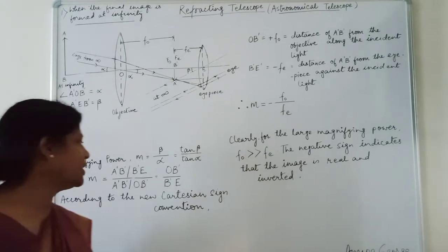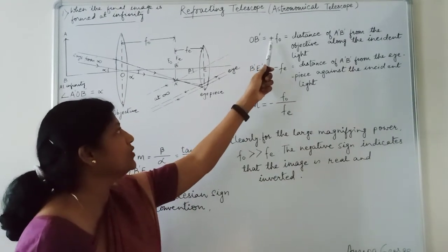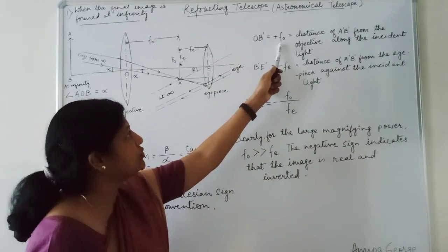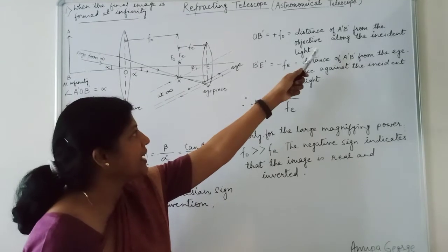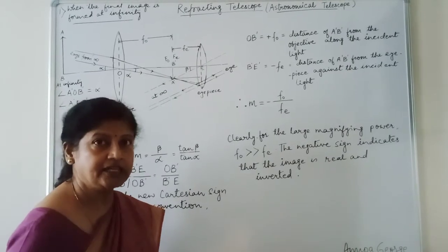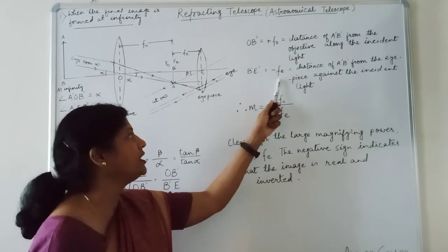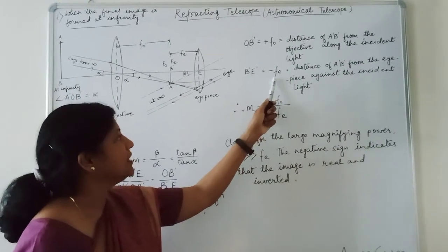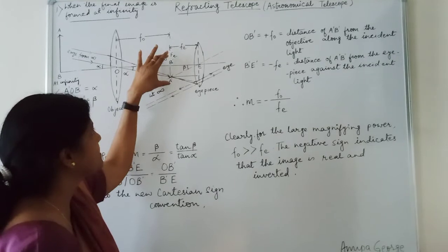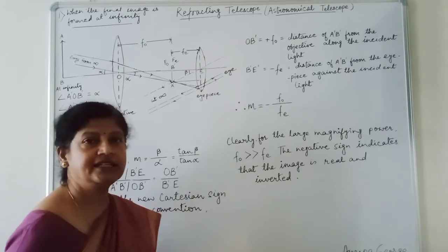According to the new Cartesian sign convention, we have OB dash is equal to plus FO, O for objective. It is equal to distance of A dash B dash from the objective along the incident light. And B dash E is equal to minus of FE, E for eyepiece, which is equal to distance of A dash B dash from the eyepiece against the incident light.